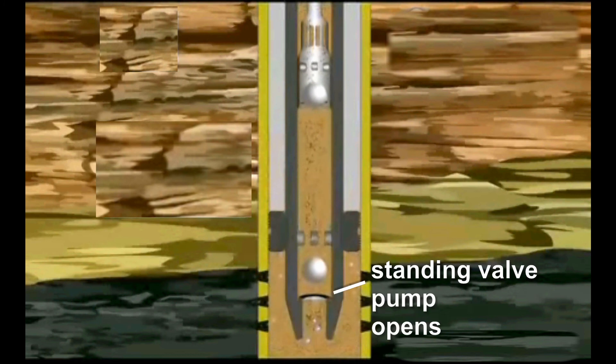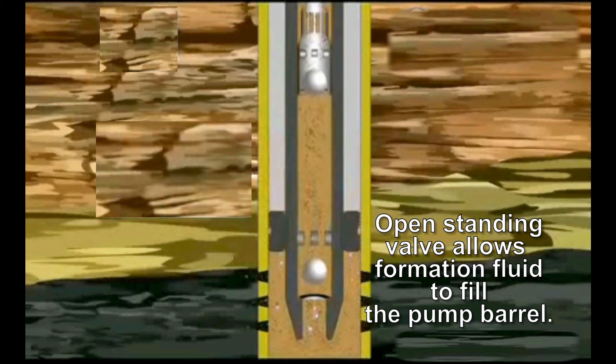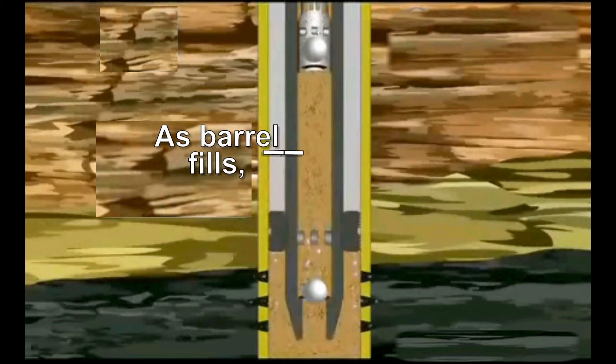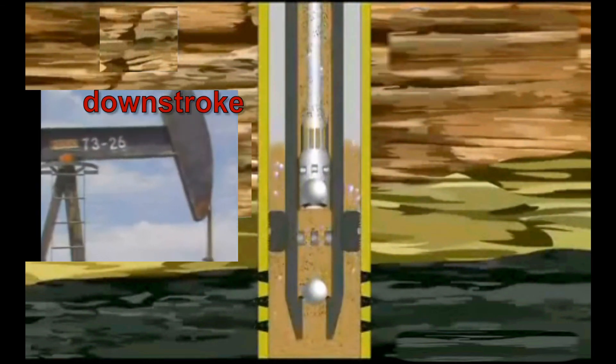On the upstroke, the standing valve at the bottom of the pump opens due to a drop in pressure in the pump barrel. This open standing valve allows the formation fluid to fill the pump barrel. As the barrel fills, the plunger reaches its uppermost position and then starts its downward movement or its downstroke.